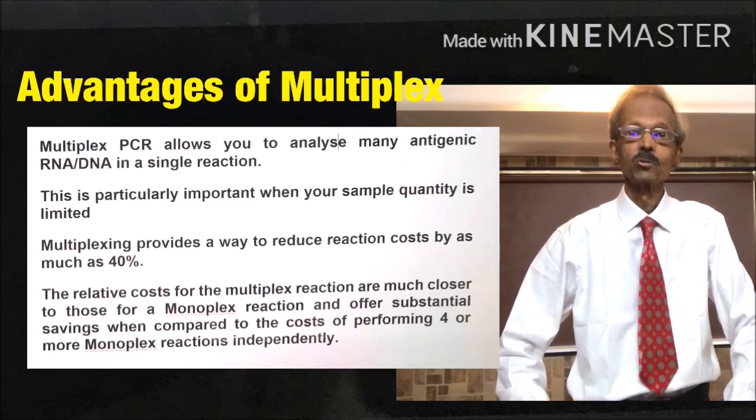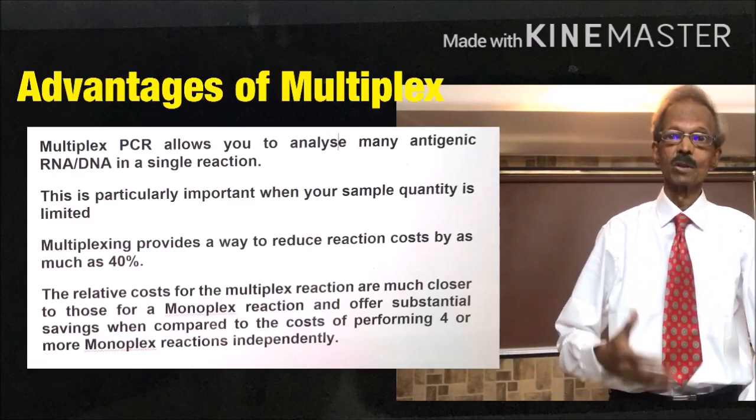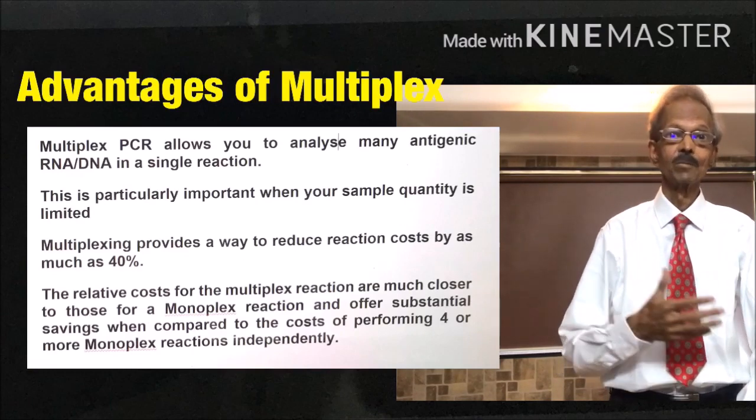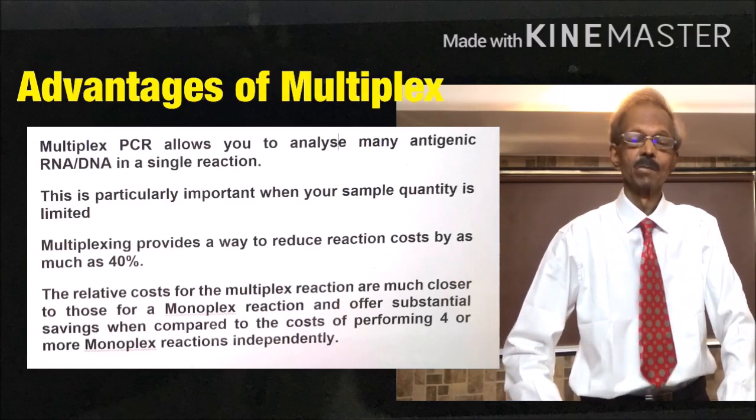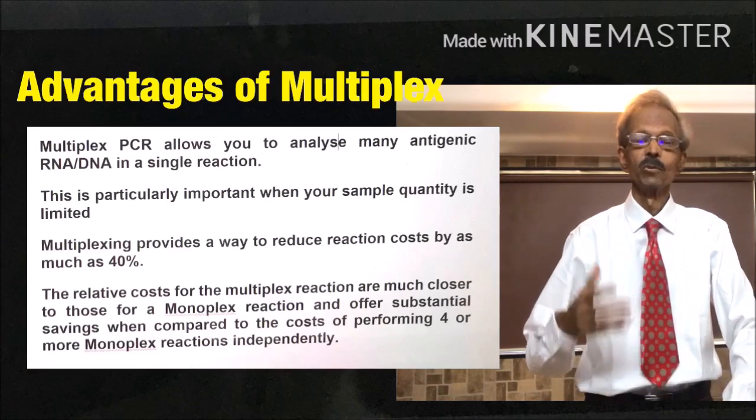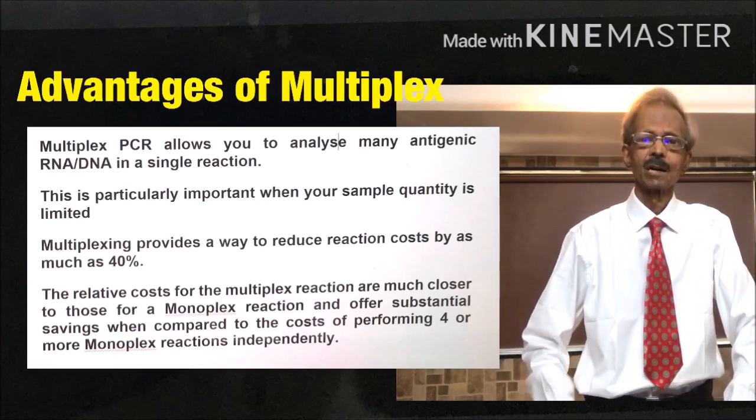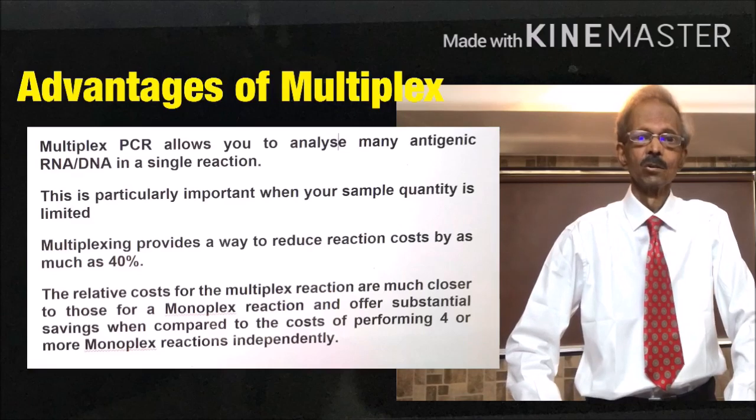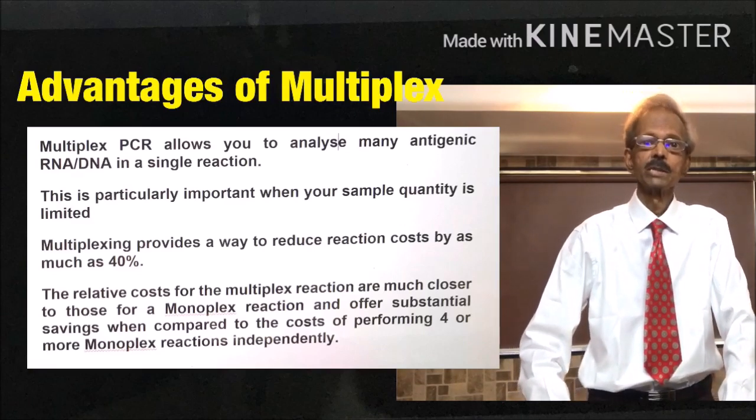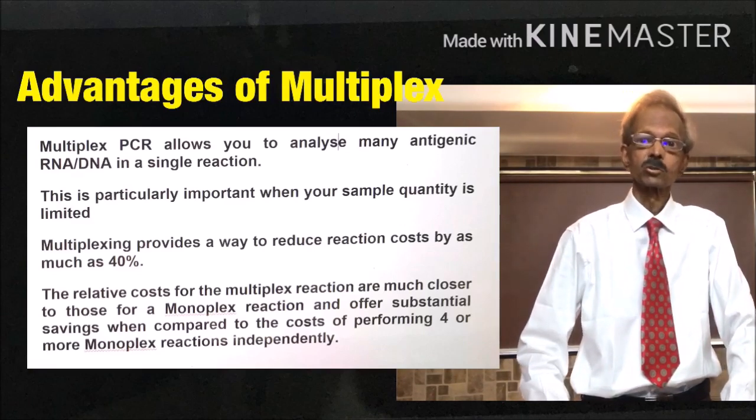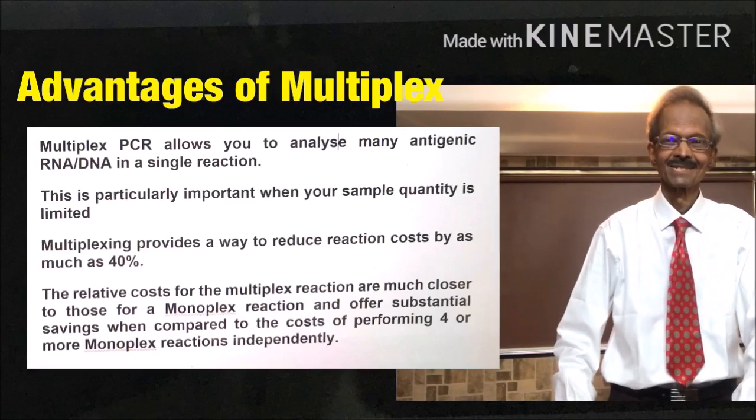What are the advantages of multiplex tests? In monoplex PCR, 3 to 4 hours are required for the test of one organism. Hence, for 4 organisms, 16 hours is required. However, in multiplex, in 3 to 4 hours, 4 and more organisms can be detected. Multiplex saves time. It is cost effective since by using only one set of PCR, one can work. And sample quantity required is also less. Reagents required also less. And as I said earlier, it is possible to test COVID-19 along with related secondary bacterial and fungal infections.